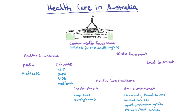Looking at this picture here in relation to health care in Australia, we start at the top with the Commonwealth Government or the federal government, which comes down to state and local government. These governments are responsible for policies, finances and health programs.